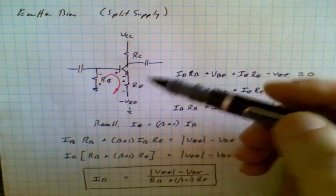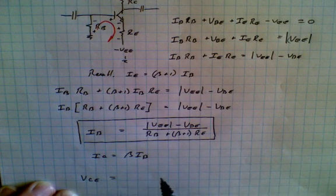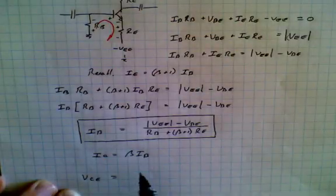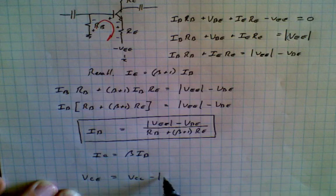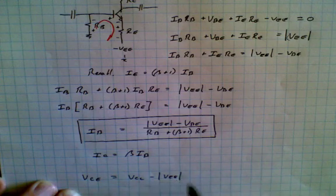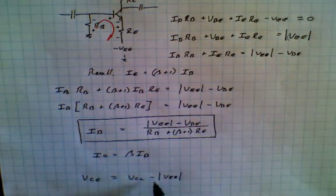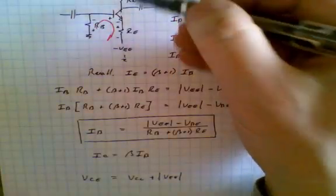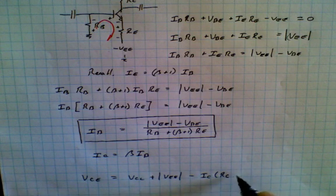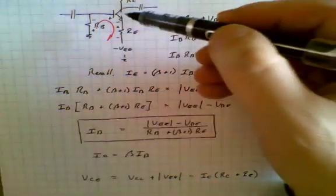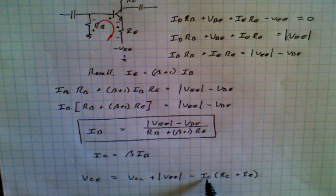Since the collector and emitter currents are very close, the voltage from collector to emitter of the transistor equals VCC plus the absolute value of VEE, minus the collector current times (RC plus RE). There will be a slight error here because it should strictly be IE times RE, but IC and IE are approximately close enough.